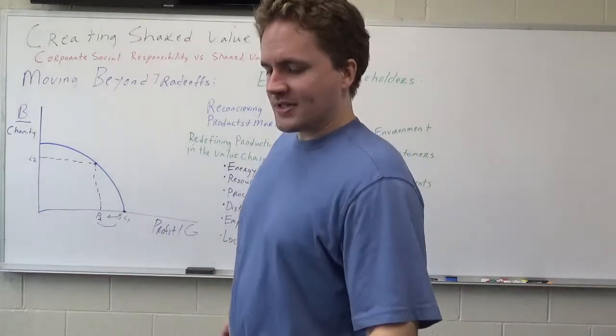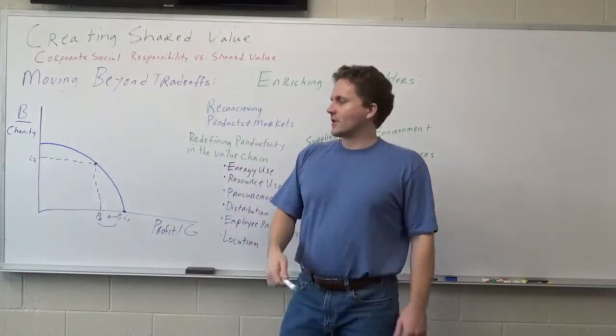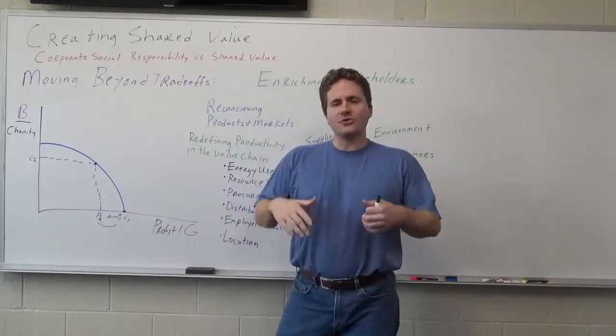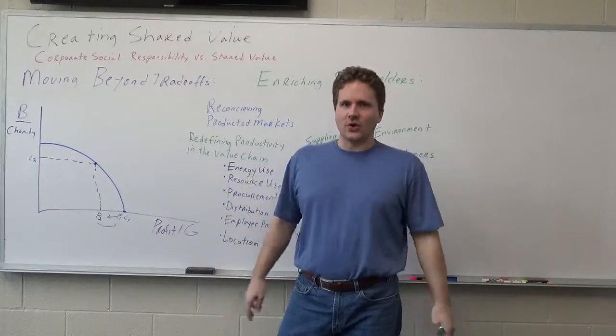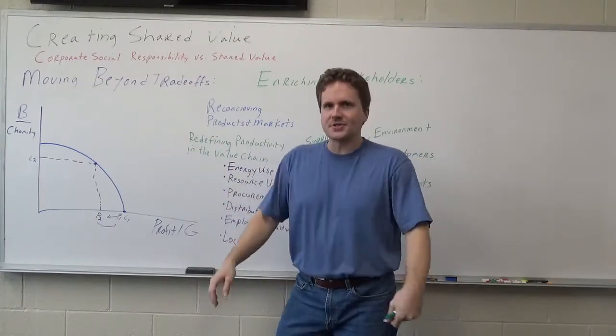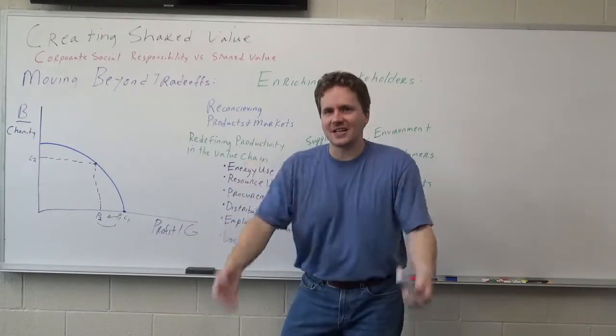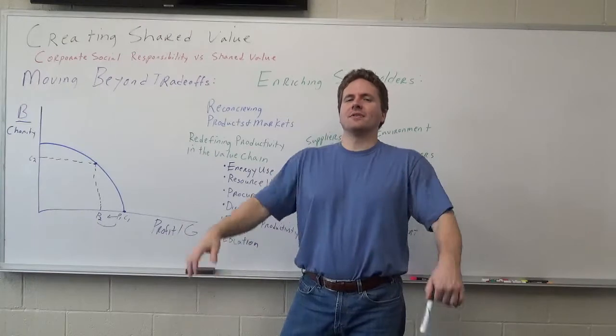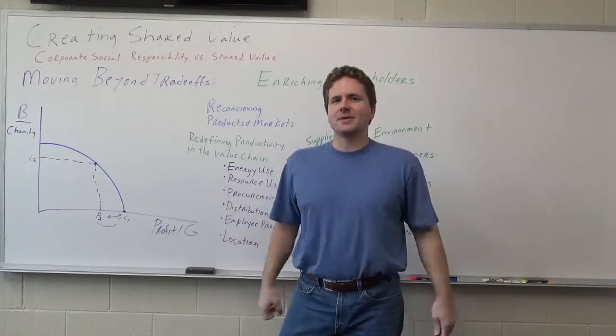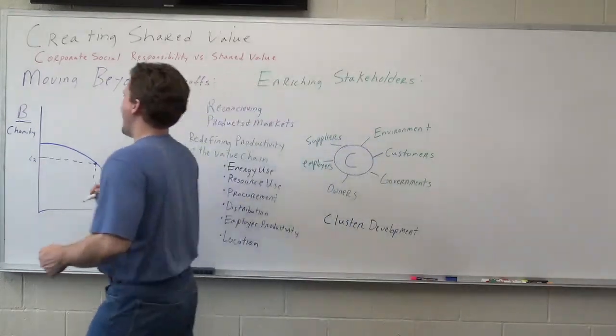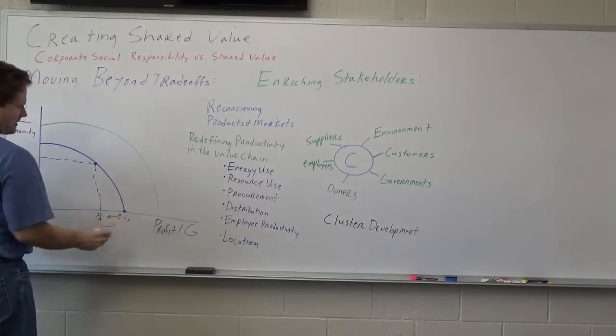But what Michael Porter is saying in this article is that by creating shared value, for example, this production possibility curve makes certain assumptions that labor is only so productive, machines are only so good, the environment only holds so many resources. But by investing in your different stakeholders, by investing in your employees you can make them more productive, by respecting the environment it can give you more help, by working hand-in-hand with governments on initiatives the governments can become more supportive, and therefore your curve can actually move out.